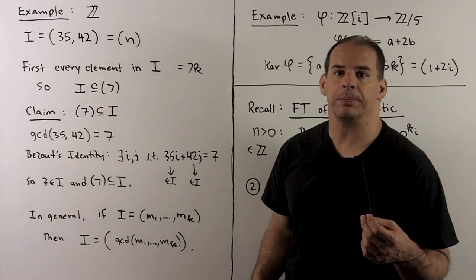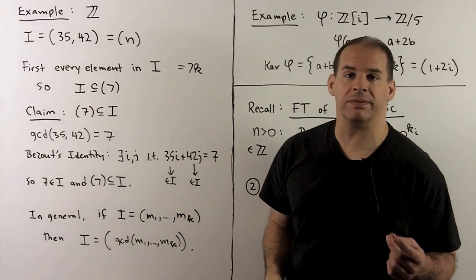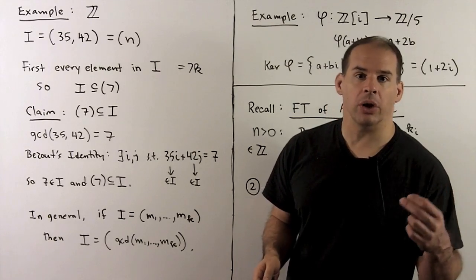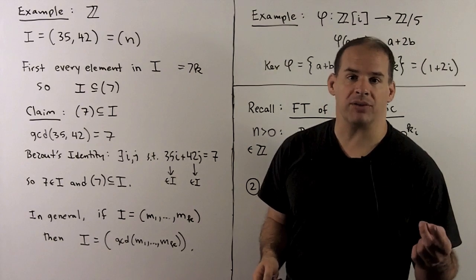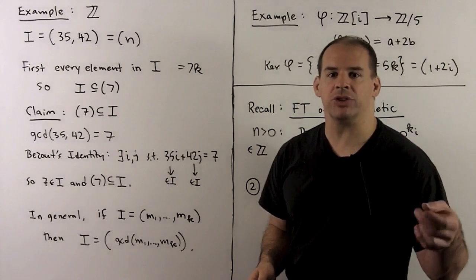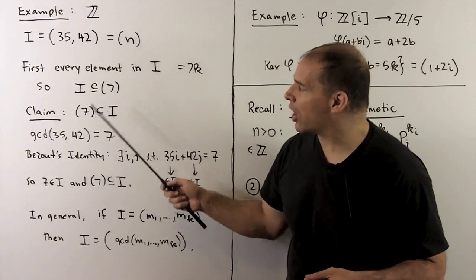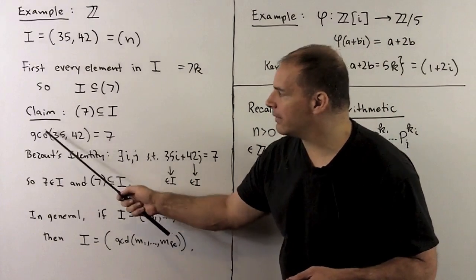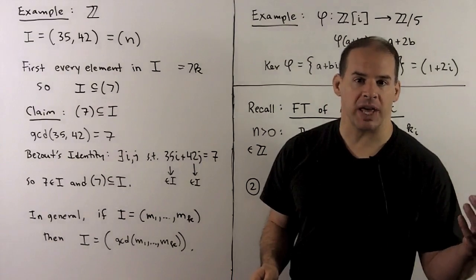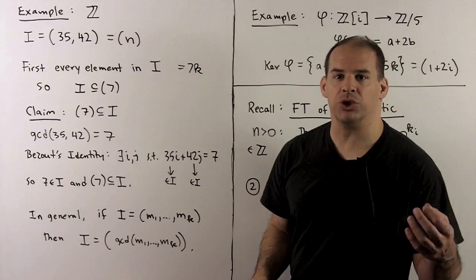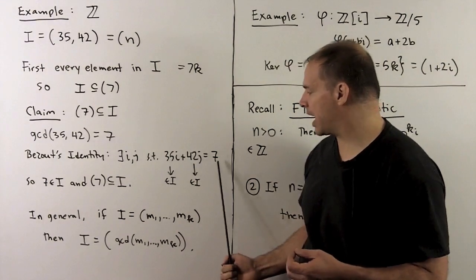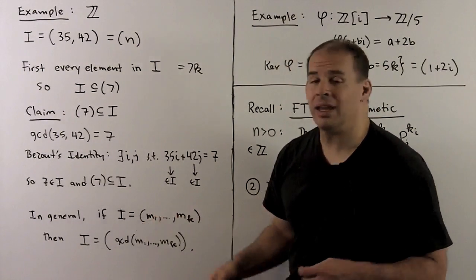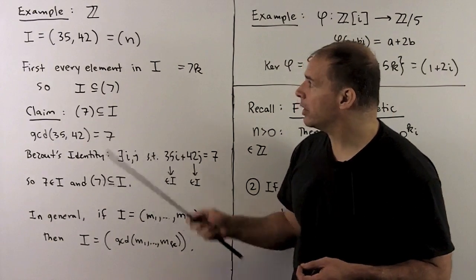How do we make use of the principal ideal property? Consider the integers. If I have the ideal generated by 35 and 42, we know we can write that as all multiples of a fixed n. Every element in this ideal is a multiple of 7: 35 is a multiple of 7, 42 is a multiple of 7, and any linear combination over the integers will also be a multiple of 7. So our ideal is contained in the ideal generated by 7. For the other direction, the GCD of 35 and 42 is 7. We invoke Bézout's identity: there exist i and j such that 35i + 42j = 7. Since 35 and 42 are in I, this linear combination is in I, so 7 is in I and the ideal generated by 7 is contained in I. Therefore n = 7.